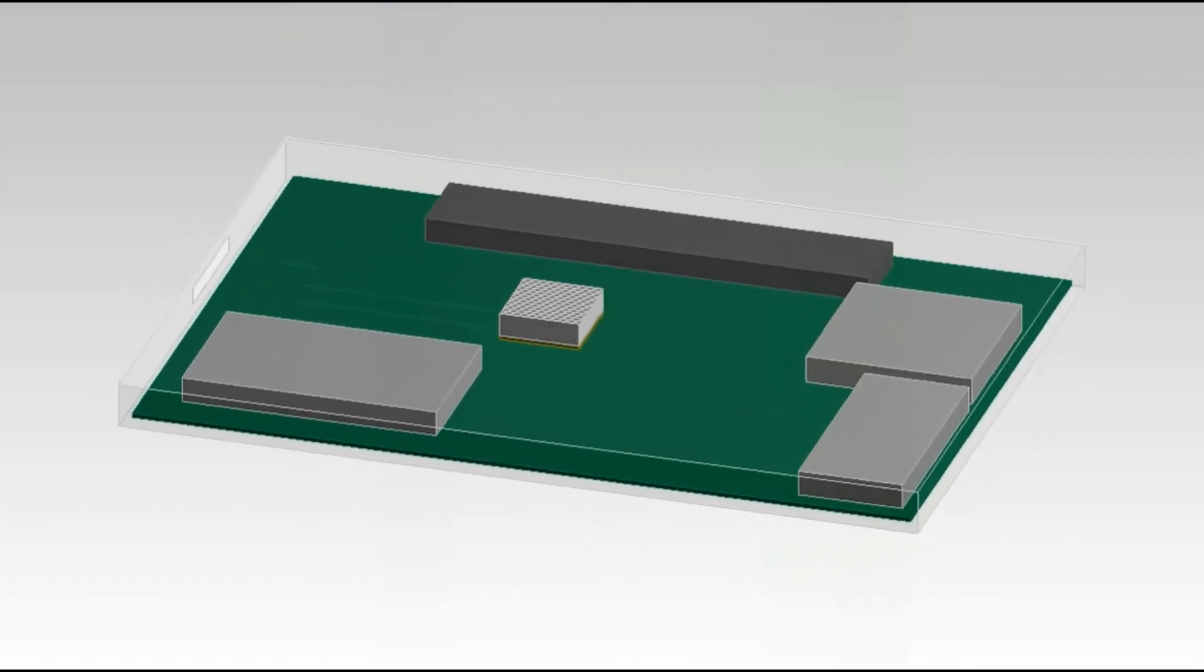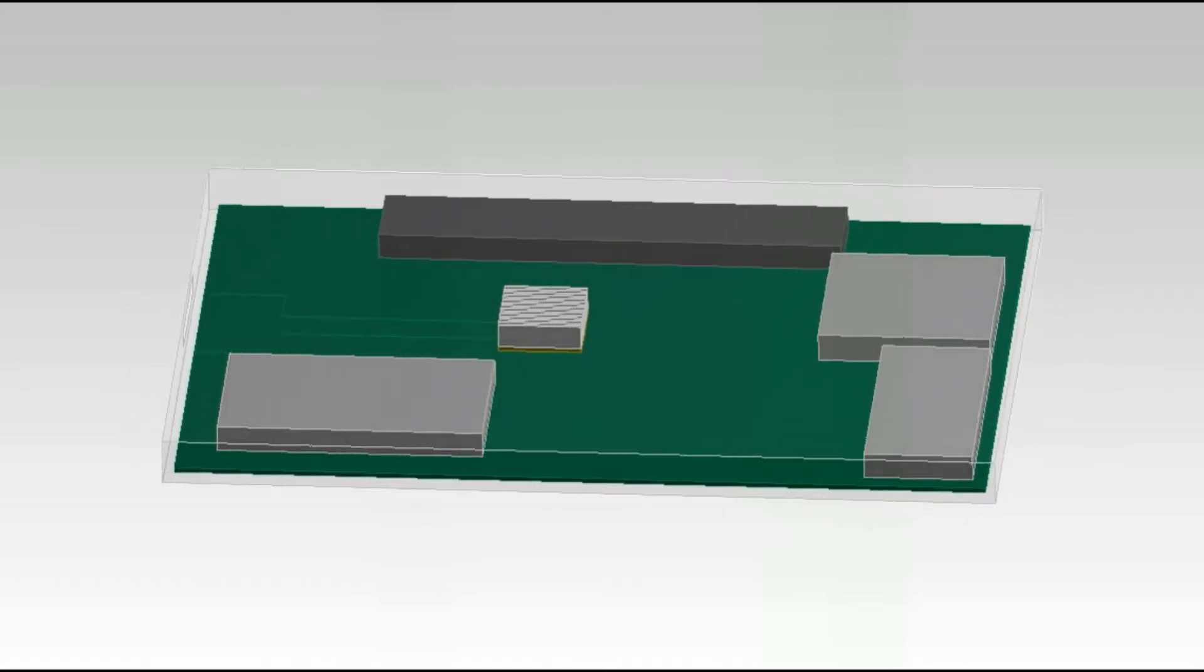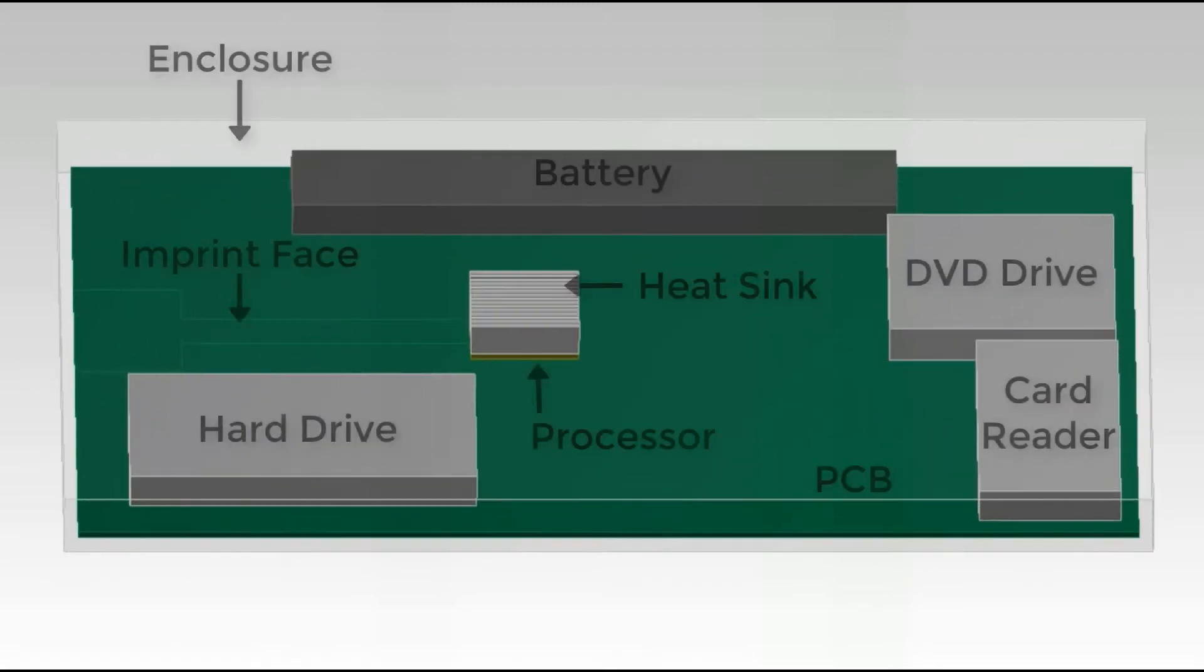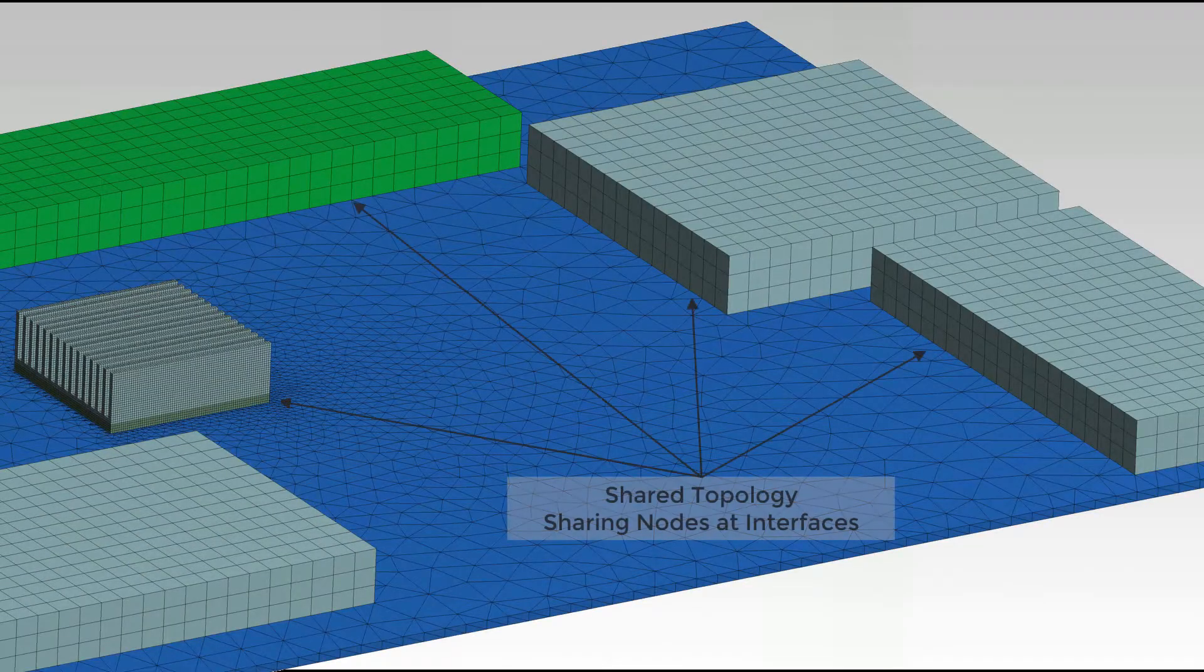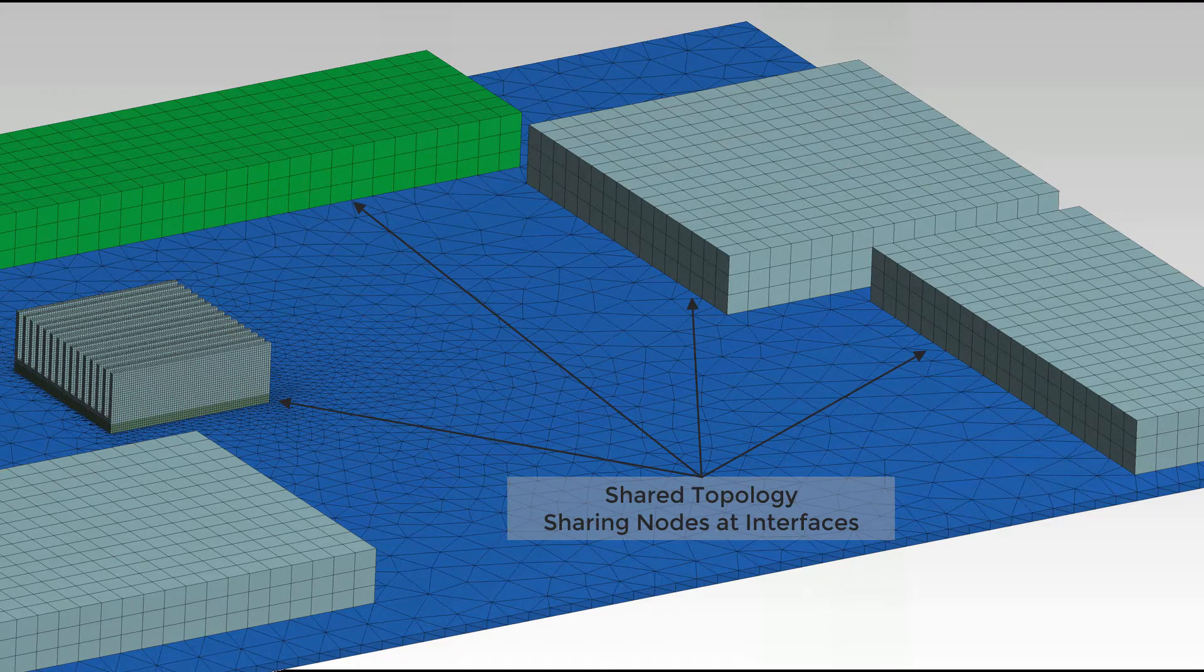In our simplified assembly, various components such as the processor, the battery, hard drive, DVD drive, card reader, and the heat sink will be placed directly on the PCB. Although all of these components are enclosed, we'll neglect the enclosure for our simulation. All the electronic components will have shared topology with each other, and hence they'll have perfect thermal contact and shared nodes at touching interfaces.